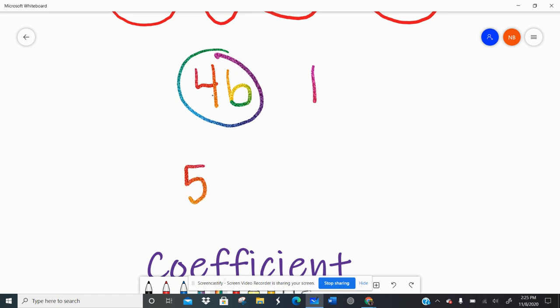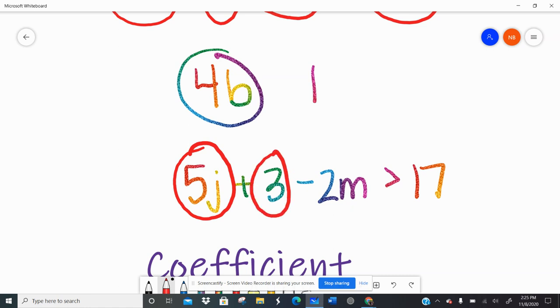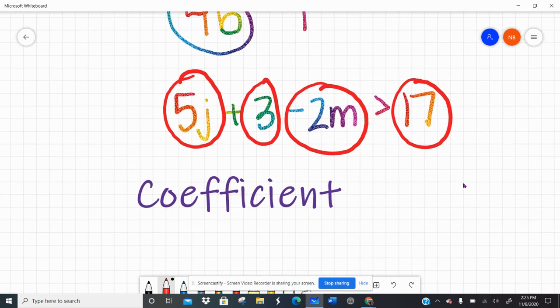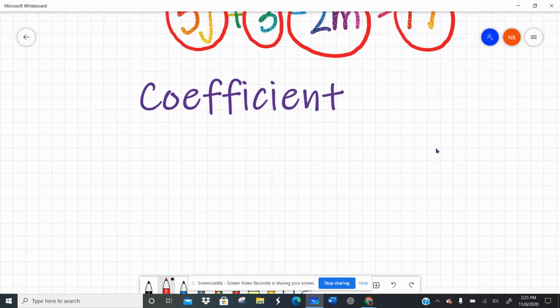If I have 5j plus 3 minus 2m is greater than 17, right? I can circle my terms. 5j is one term. 3 is a term. Negative 2m is a term, and 17 is a term. So there would be four terms to that inequality. So terms are the pieces of the puzzle.